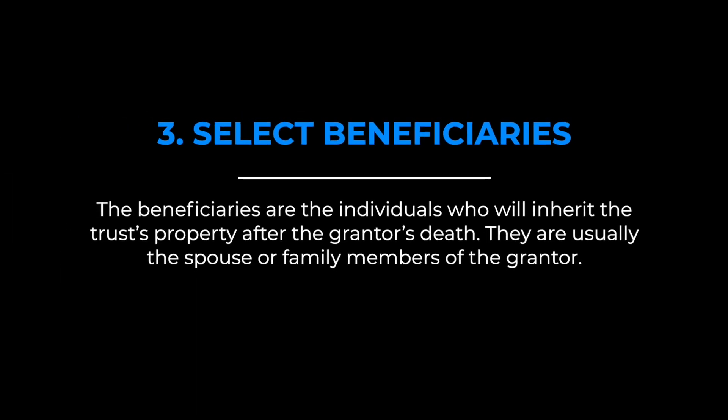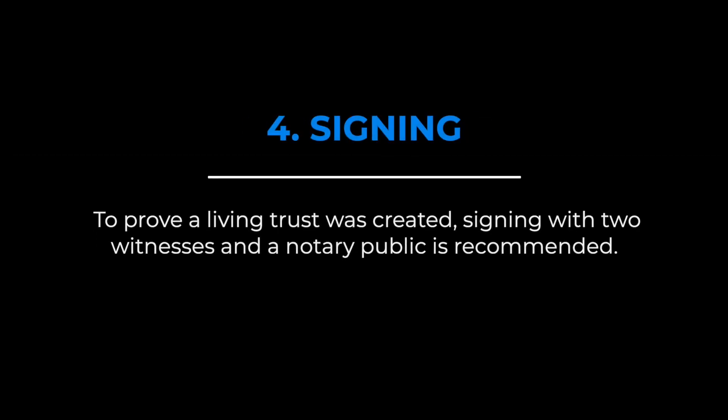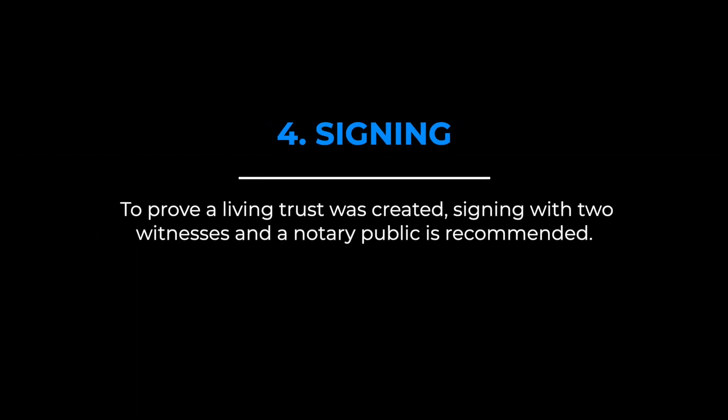Step three: select beneficiaries. The beneficiaries are the individuals who will inherit the trust property after the grantor's death — usually the spouse or family members. A beneficiary can be any person, born or unborn, or organization legally permitted to hold an interest in property. If a grantor wants to give a portion of the trust property to a pet, a pet trust can be created within the trust document. For signing, to prove a living trust was created, signing with two witnesses and a notary public is recommended.